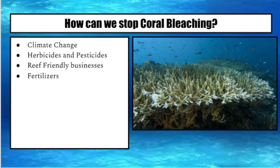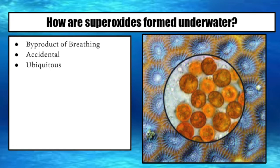Superoxides are a byproduct of breathing. Anything that breathes oxygen makes superoxides and quickly expels them. Superoxides are very toxic, so when created they must be expelled immediately. They are also ubiquitous, meaning they are found almost everywhere. In order to create energy, cells take electrons from things like fat or carbohydrates and transfer those electrons into oxygen. Once the oxygen molecule has grabbed four electrons, it pairs up with hydrogen to form water.